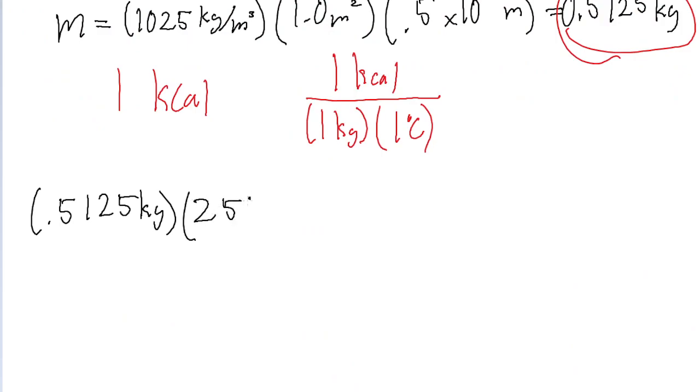So 25 degrees Celsius, when you multiply it by the conversion factor we set up to convert into the amount of energy needed to heat it up by one degree Celsius. And we put this into a calculator, we find an energy of 12.8 kilocalories.